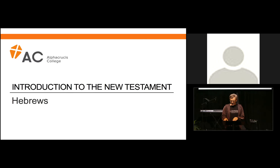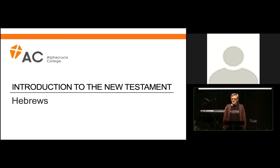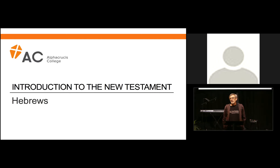Josh reads: 'They serve a copy and shadow of the heavenly things, for when Moses was about to erect the tent, he was instructed by God saying, see that you make everything according to the pattern that was shown you on the mountain.' This is talking about the tabernacle and how God gave Moses specific instructions on what materials to use and how it was to be built. Where did those instructions come from?